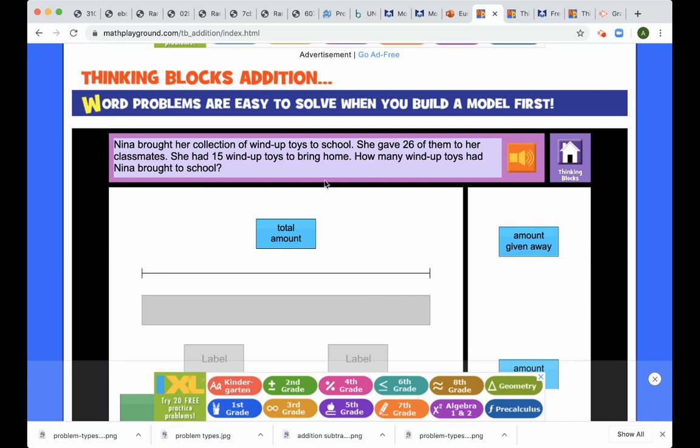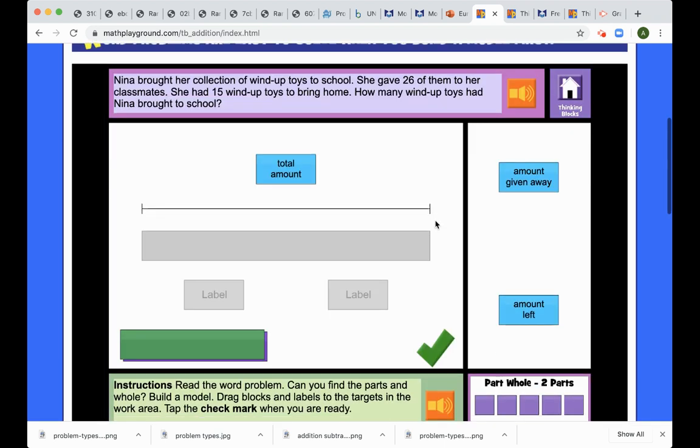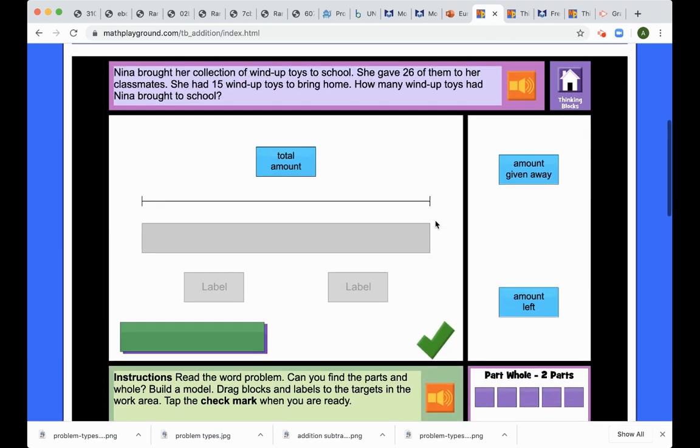Now, the first part says Nina brought a collection of wind-up toys. She gave 26 to her classmate. And she had 15 to bring home. How many did she bring to school in all? So, we click and drag.